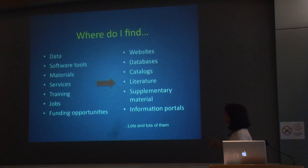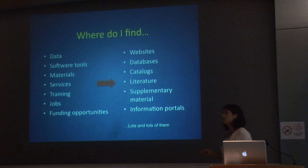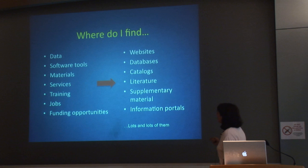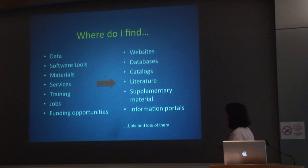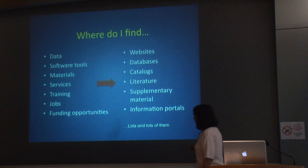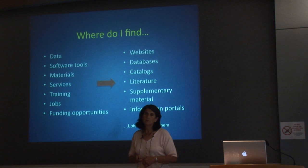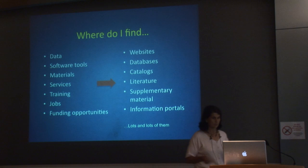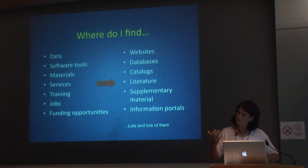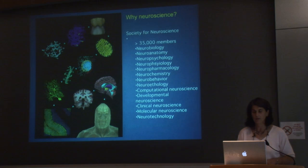Where is this information? It's scattered across many different information sources: websites, databases, catalogs, the literature, supplementary materials published as part of journal articles, information portals that people have put together. In our initial estimates of how many databases are out there useful for neuroscience, we come up with between 2,000 and 3,000. Nobody's going to 2,000 or 3,000 different databases by themselves. We all spend an increasing amount of our time browsing and searching because we're always finding new things.